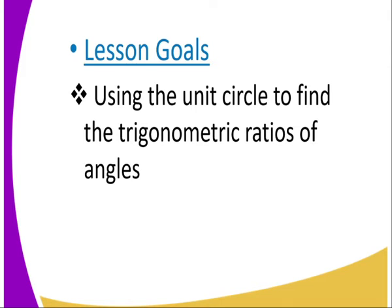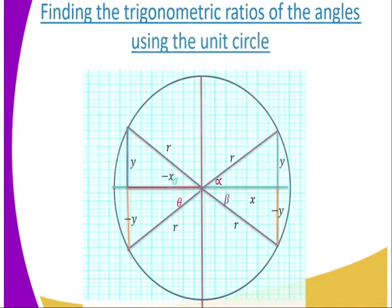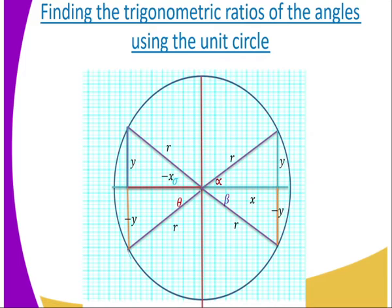We talked about how the unit circle operates across the first quadrant, second quadrant, third quadrant, and fourth quadrant. We said that in the first quadrant, all the trigonometric ratios are positive — that is where we have the alpha angle. Sin, tan, and cos are all positive.